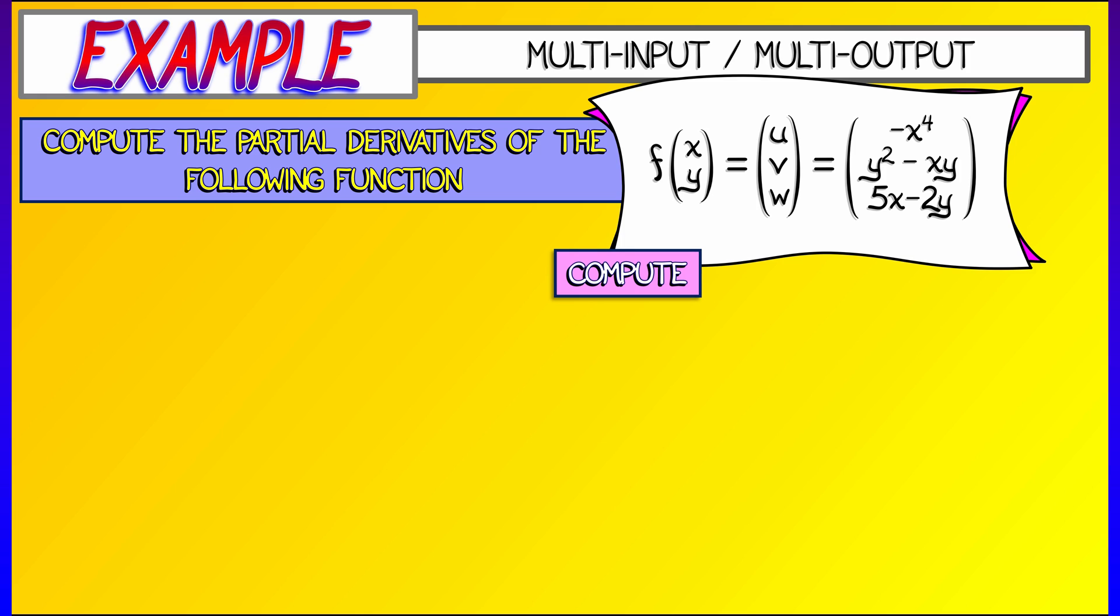Now, to compute the partials, we just take the first output, let's say u, and look at the partials of that with respect to the two inputs, x and y. What's the partial of u with respect to x? Well, u is minus x to the fourth, so the derivative of u with respect to x is simply minus 4x cubed. That's easy.